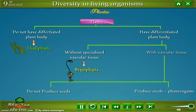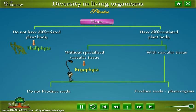And plants which have a differentiated plant body. This category is further divided into two subcategories: plants without specialized vascular tissue, for example Bryophyta, and plants with vascular tissue.